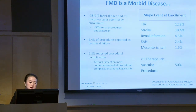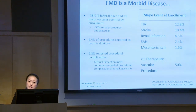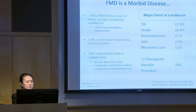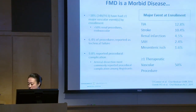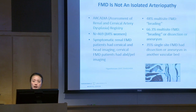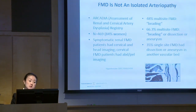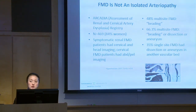FMD is not just a benign cause of high blood pressure — it's a significant arteriopathy with serious presentations including strokes, heart attacks, and renal infarctions. Patients with FMD who undergo interventions are more prone to iatrogenic injury, where a wire or arterial puncture can cause a tear — similar to what's been shown in SCAD literature. A European study found that if a patient has FMD and you look elsewhere, half the time you'll find beading in another arterial bed.